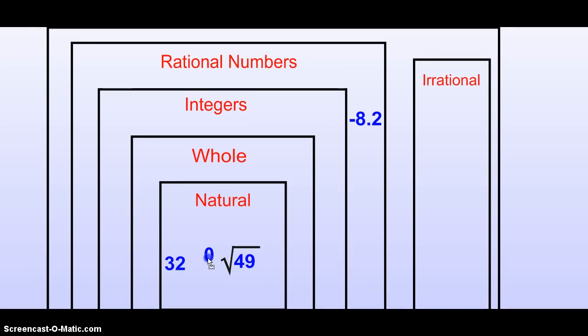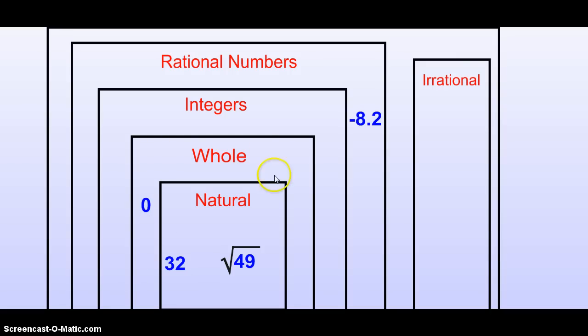Let's start at the smallest. Would 0 be natural? No. Natural starts at 1. Whole numbers start at 0. So, we'll put that in this rectangle for whole numbers. Pi over 9.